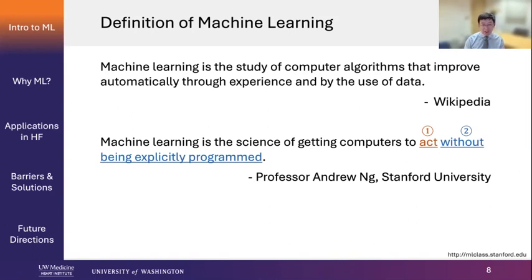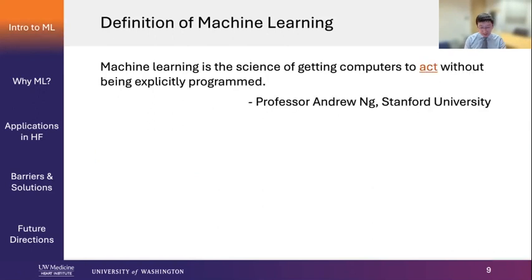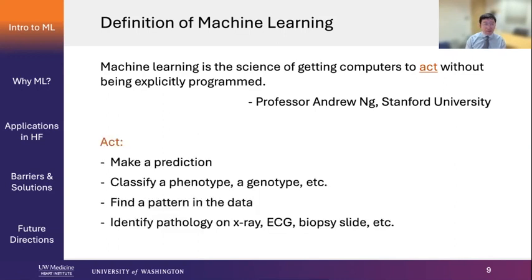He says that machine learning is the science of getting computers to act without being explicitly programmed. By 'act,' we mean the computer is making a prediction, classifying a phenotype or a genotype, or finding a pattern in the data. Computers can also identify pathology on X-rays, ECGs, or biopsy slides.